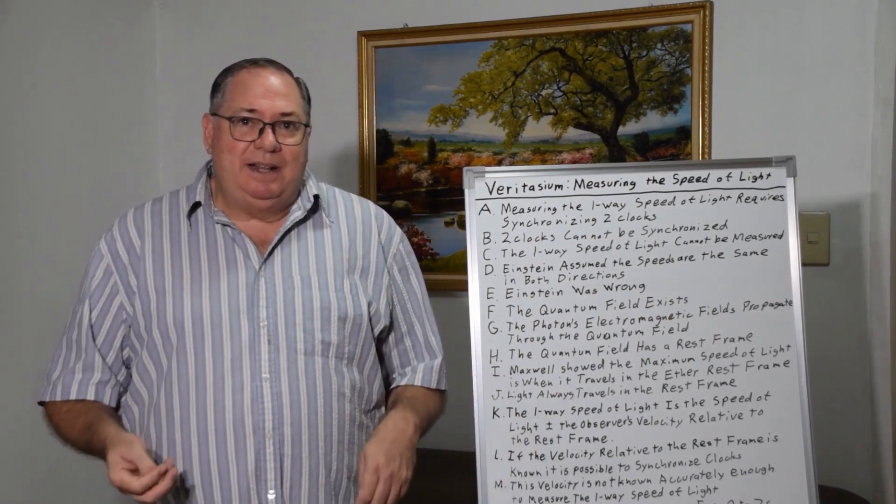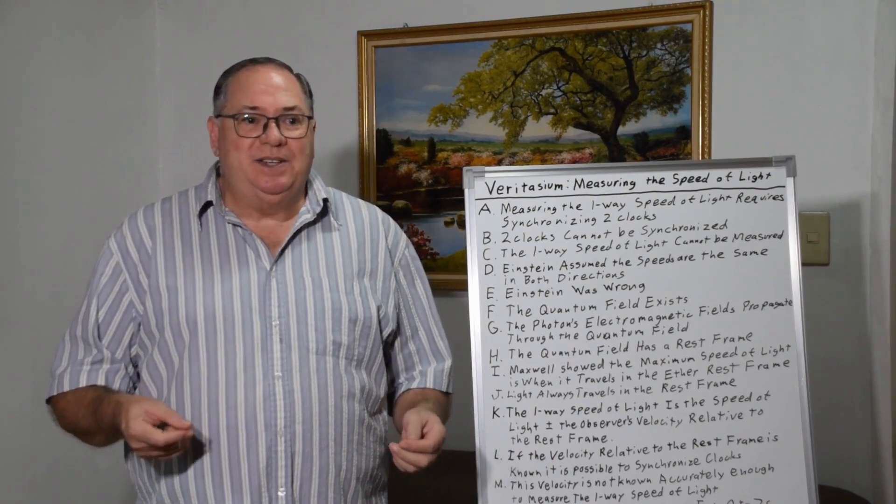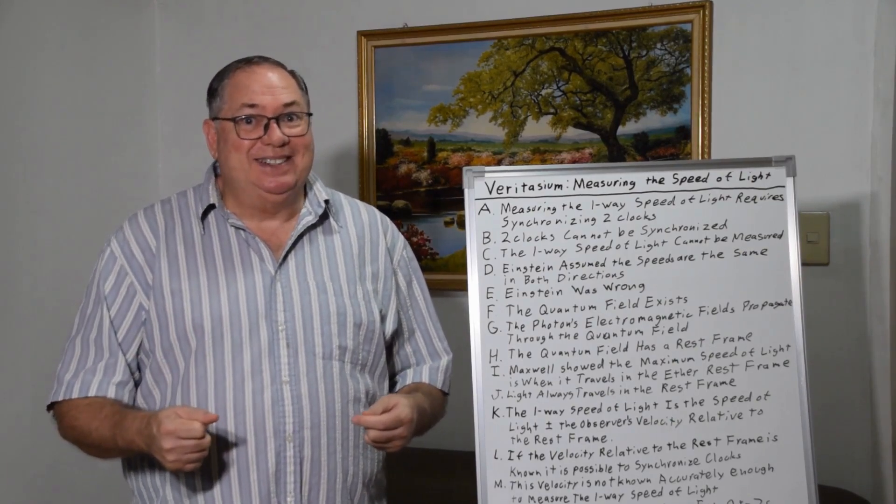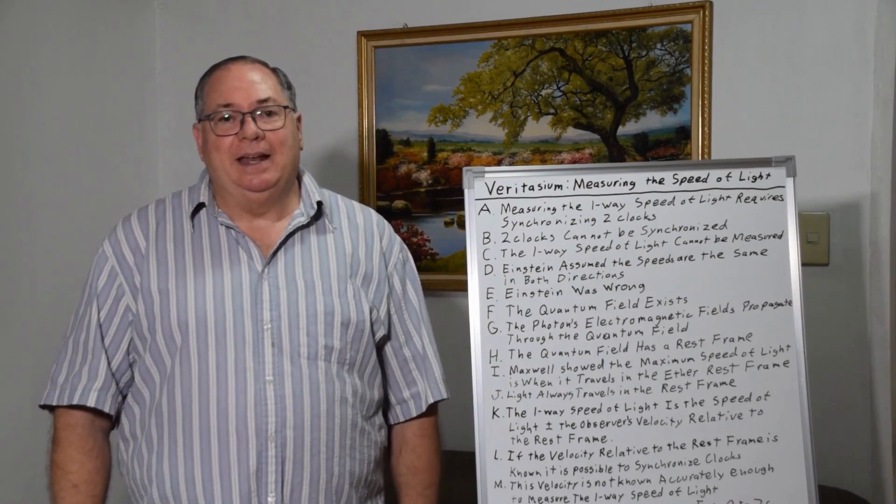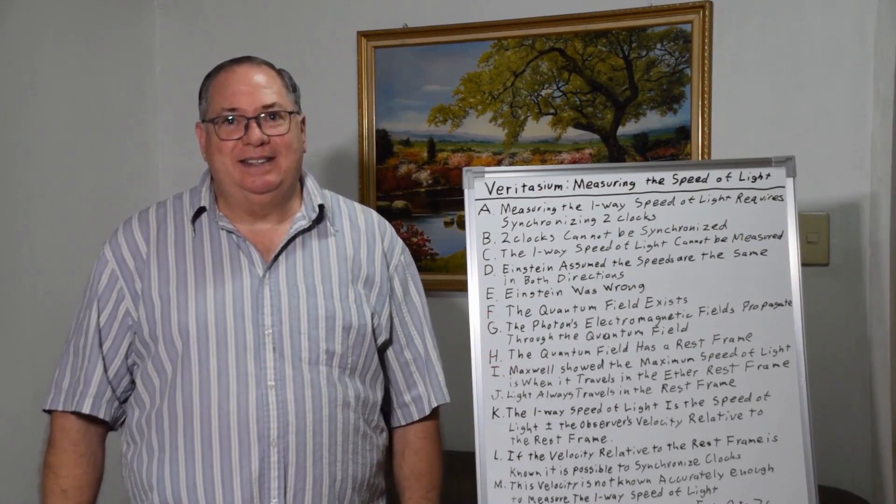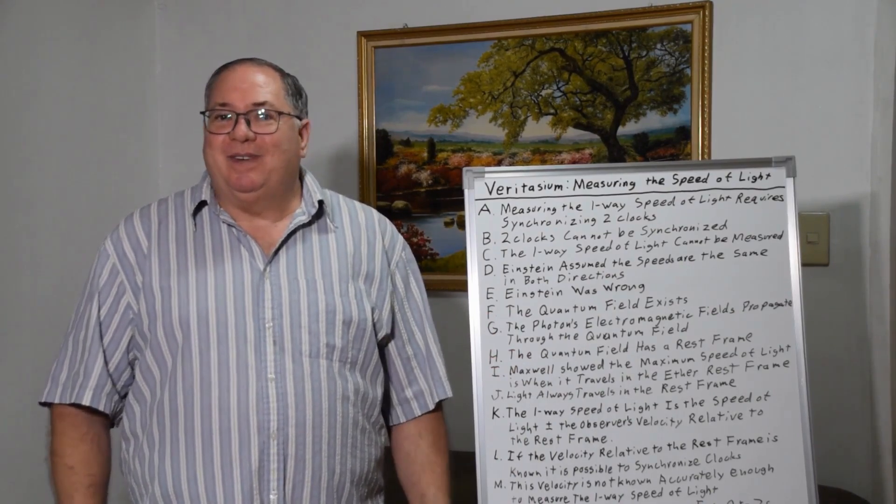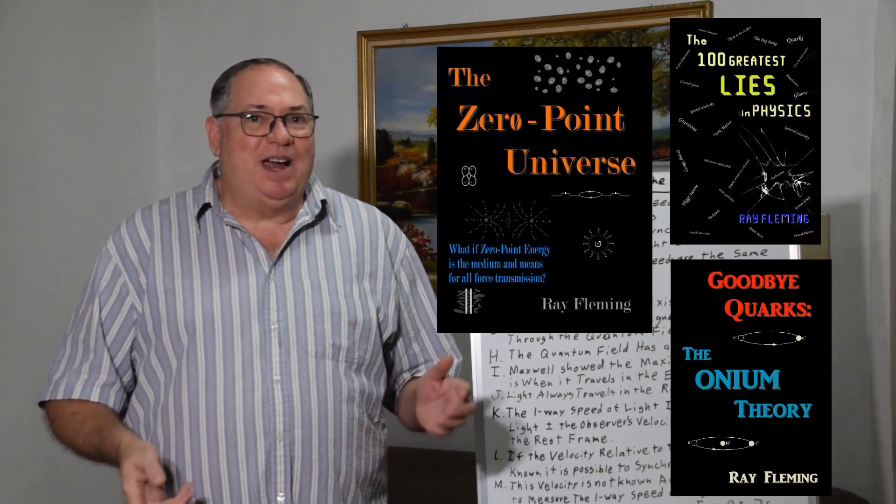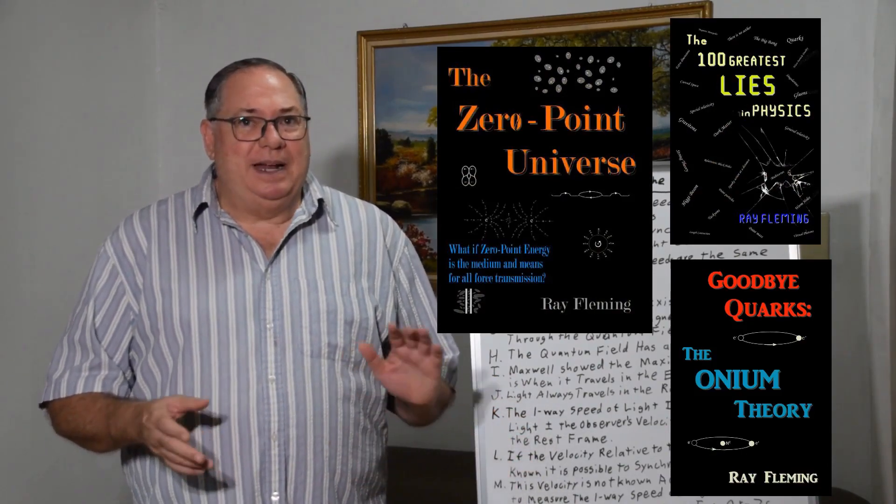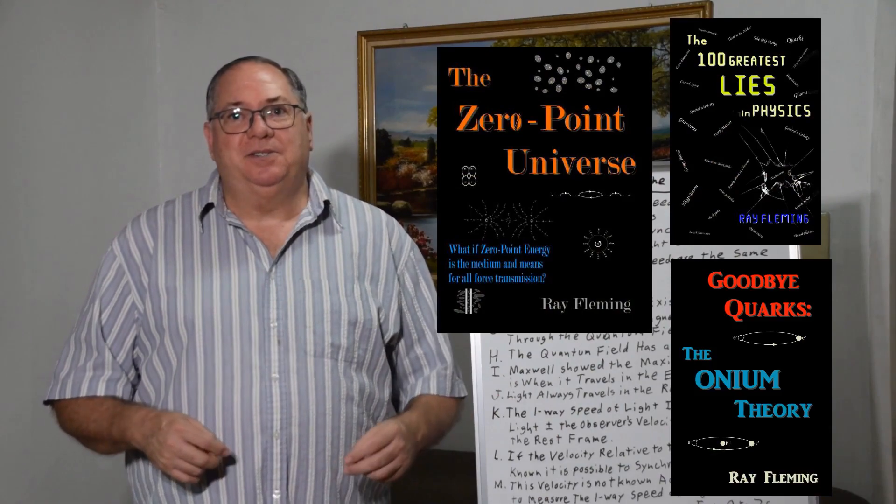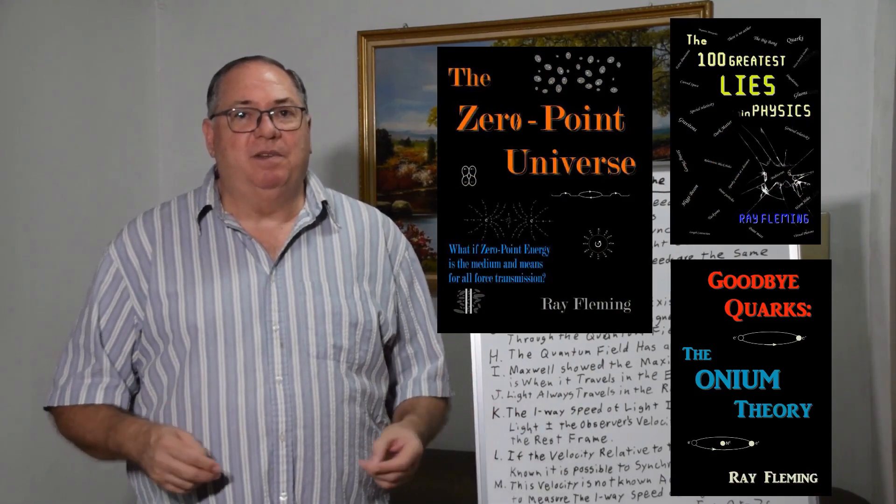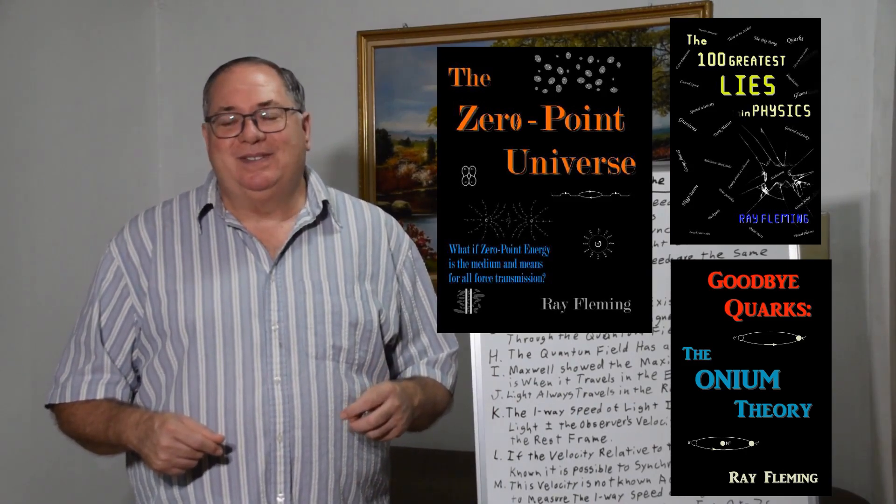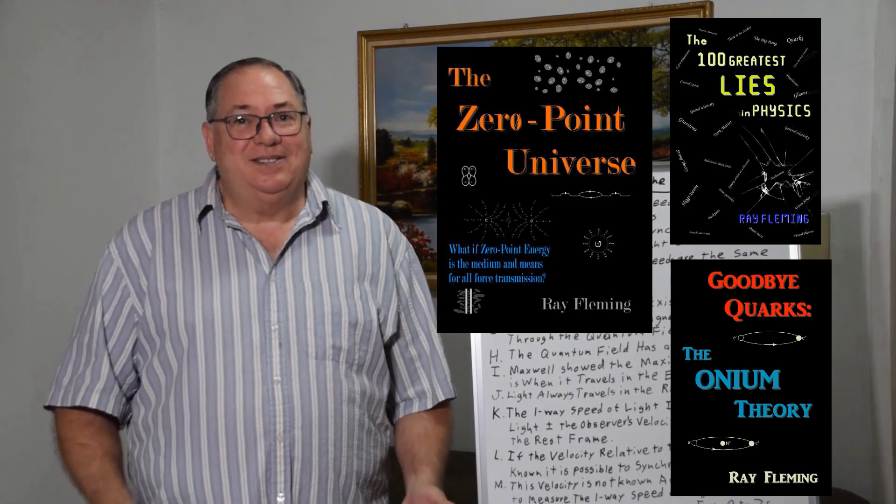Anyway, like I said, I enjoyed Veritasium's video. I'm glad he's willing to say Einstein might have made a mistake, but he should have said Einstein made a mistake here, and we need to fix it. I hope people watch my video and decide that they want to fix it. I hope you liked it. Share it with your physicist friends. Subscribe for more. I describe this a little bit in my book, The Zero Point Universe, but I don't get too heavily into special and general relativity there. Just an overview. If you buy one of my books, that'll help me in my retirement, and you'll learn a lot more. Thanks for watching.